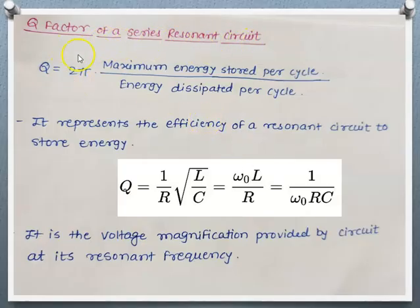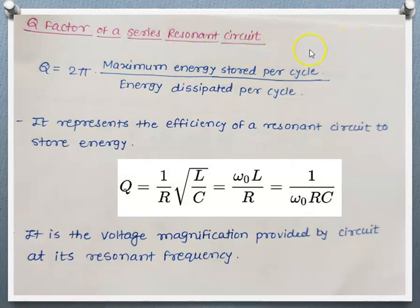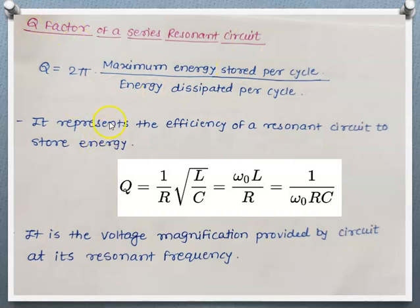The Q factor of a series resonant circuit is given by the expression: Q is equal to 2π times the ratio of maximum energy stored per cycle to the energy dissipated per cycle. The series resonant circuit consists of one resistor, one inductor, and one capacitor. The inductor and capacitor are the energy storing devices, while energy is dissipated by the resistor. The ratio of maximum energy stored per cycle to energy dissipated per cycle is known as the Q factor.